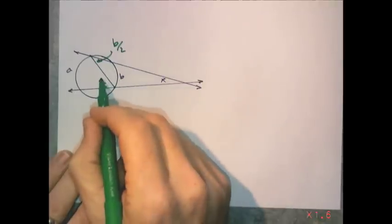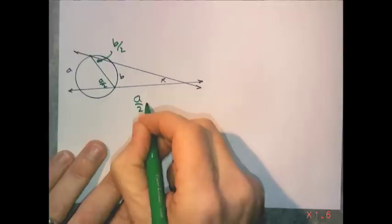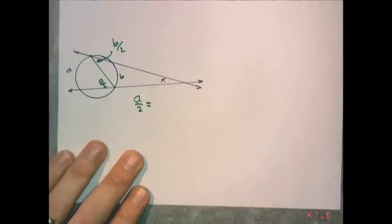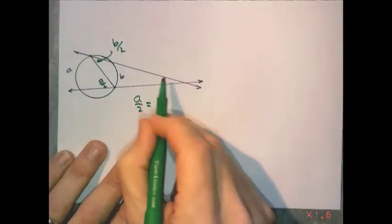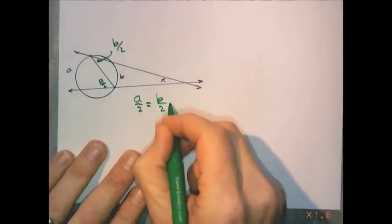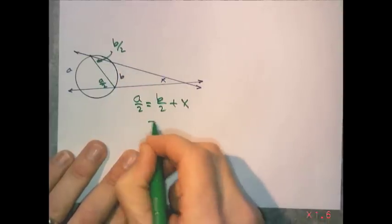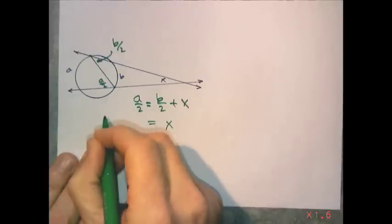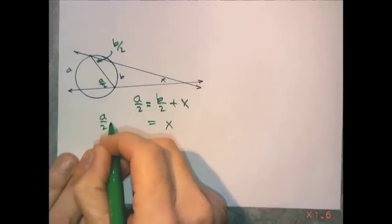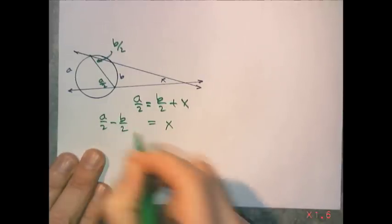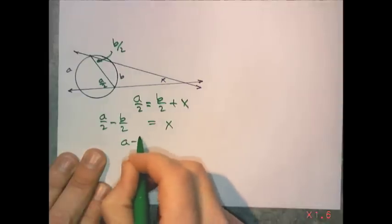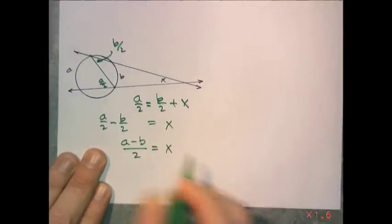The measure of the exterior angle is equal to the sum of the remote interior angles. B over 2 plus X. Solving for X, that's A over 2 minus B over 2 equals X. And I can put A minus B over 2 equals X.